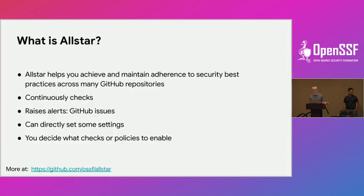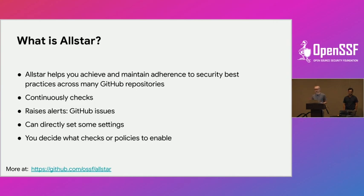Allstar is a GitHub app that continuously checks for security best practices on all of your repositories. It can raise alerts like GitHub issues, or it can actually just fix those settings if they are settings on your GitHub repositories — based on what you decide. You decide what policies to enable. It extends a little past Scorecard: Scorecard is objective, with best practices from the OpenSSF best practices working group. Allstar is more tweakable — you decide what to enforce on your own GitHub repositories.